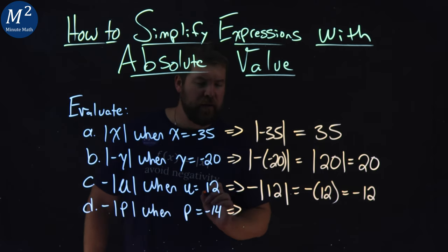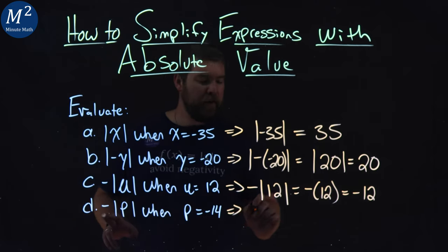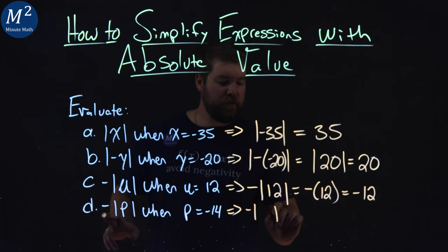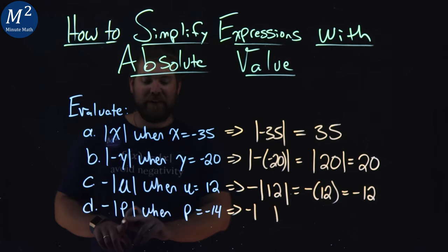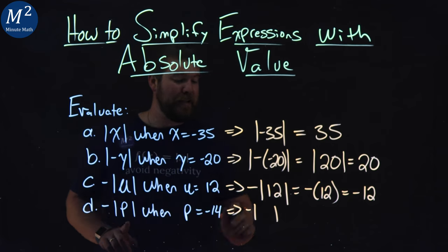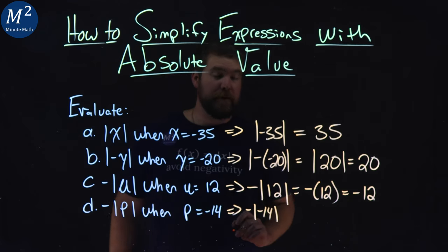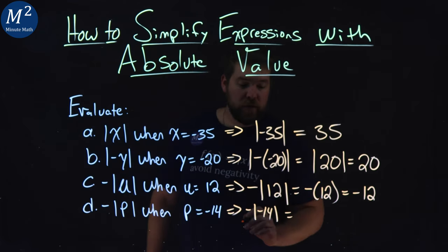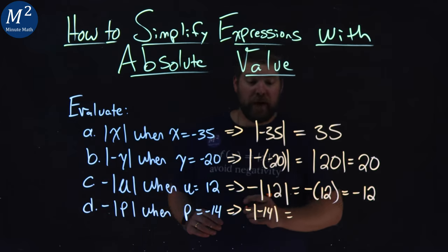Again, last one here. Write it out. Negative, absolute value, leave a space. Don't put p in yet. We're going to put negative 14, that's in for p. Negative 14. From there, keep on going. What is the absolute value of negative 14?